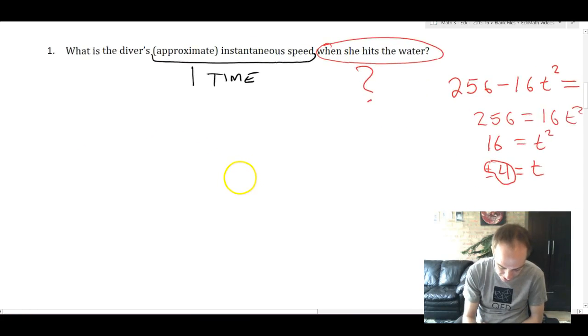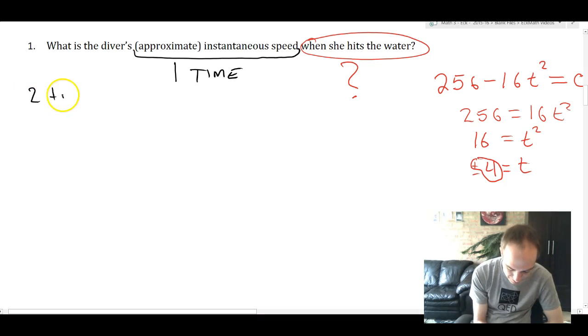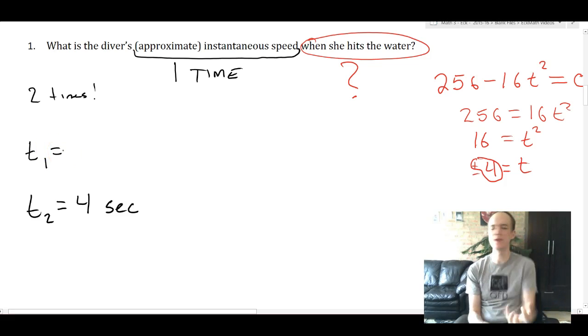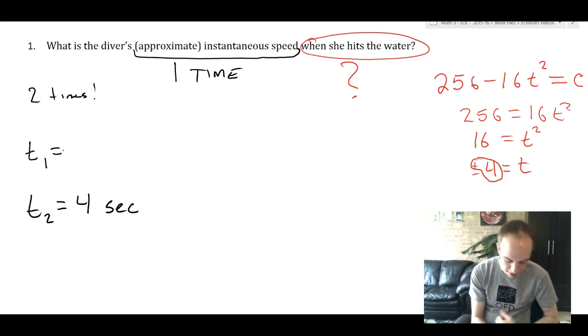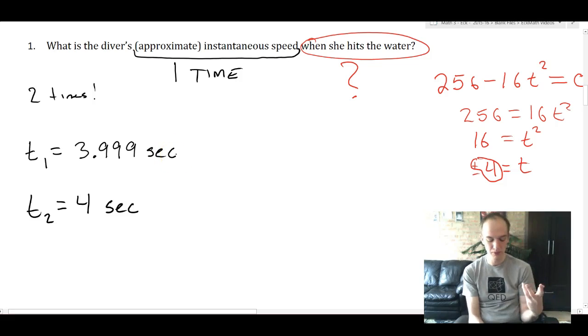Time, I'm going to call time 2, 4 seconds. I'm going to call time 1 the instant right before she hits the water, when she's a tiny, tiny bit above the water. And that is going to be 3.999 seconds. So we went from a situation with 1 time, 4 seconds, to now a situation with 2 times.